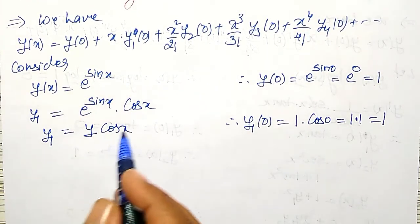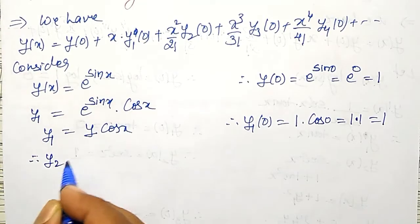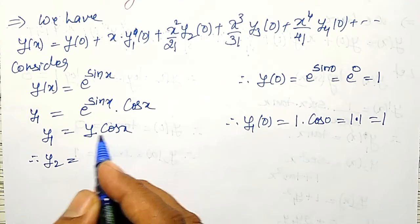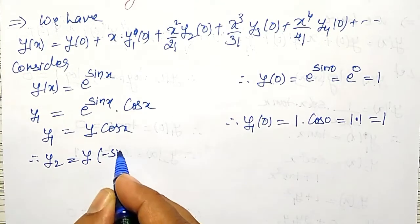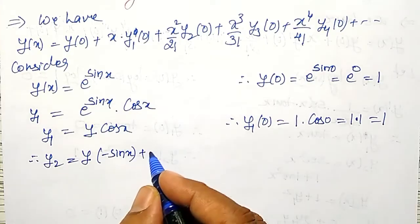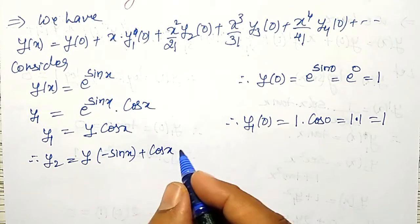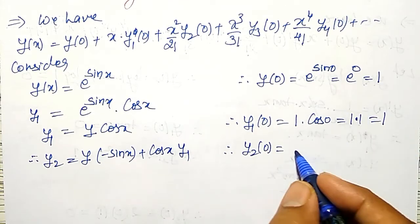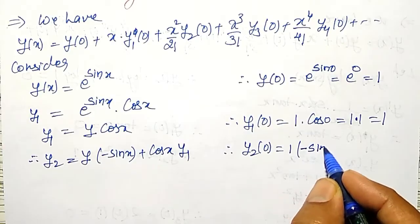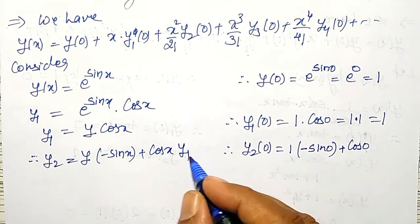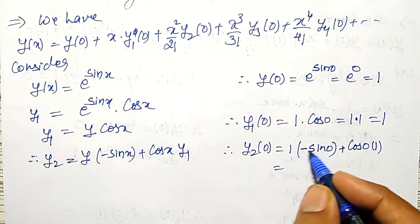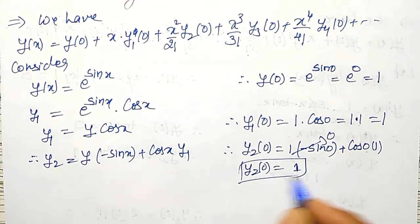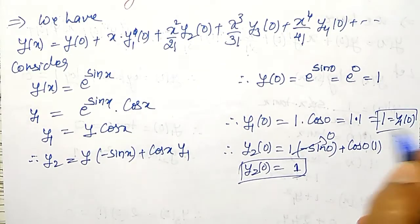To find y2, I differentiate y into cos x. Since y is also a function of x, I apply the product rule: y2 equal to y into differential of cos x, which is minus sin x, plus cos x into differential of y, which is y1. Therefore, y2 at 0 is y(0) into minus sin 0 plus cos 0 into y1(0) equal to 1 into 0 plus 1 into 1, so y2(0) is 1.